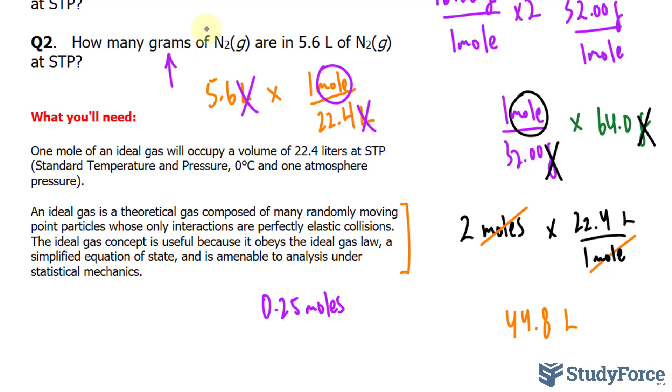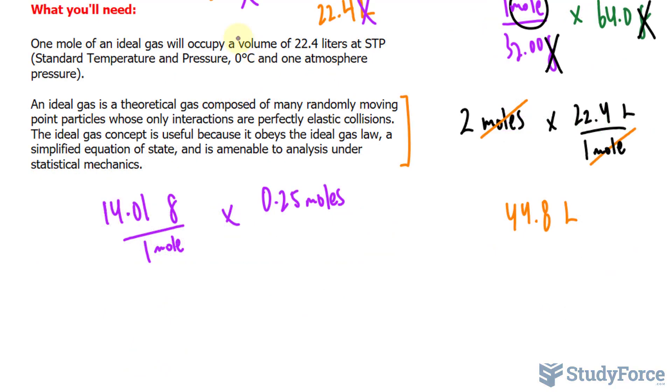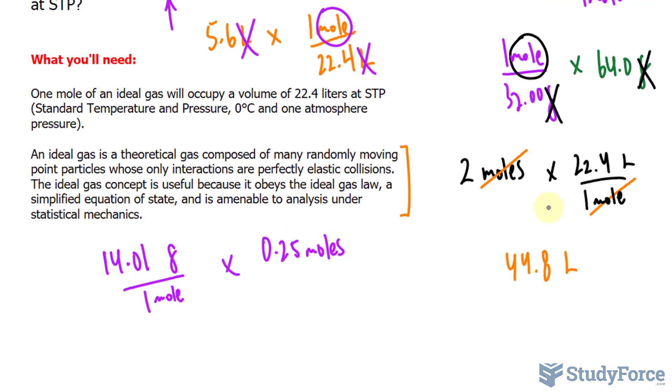Now, the molar mass of nitrogen is 14.01, and you can verify that on your periodic table, grams per one mole. Now, of course, we'll be doubling this because there are two atoms in N2. So, it's actually two times whatever this is.